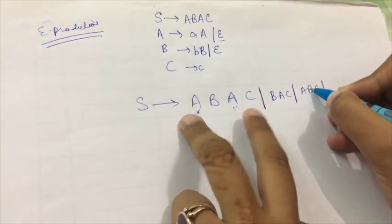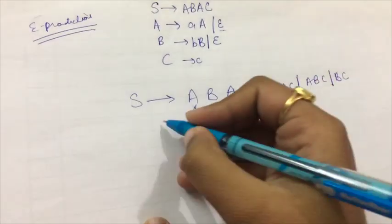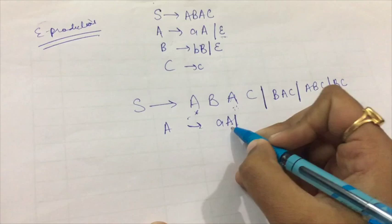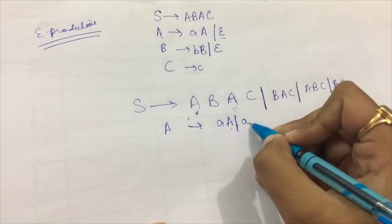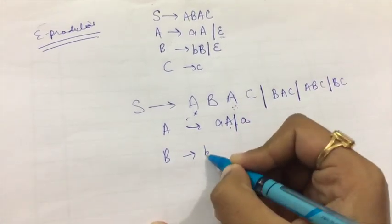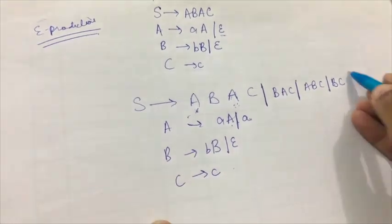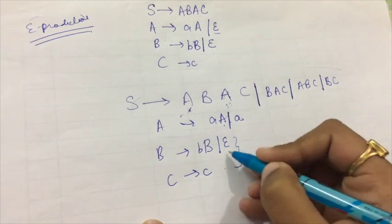There is also possibility that both the A's get null, so the production rule will get this one. And so A will also be AA, and substituting A over here we'll get simple A. And then we are left with BB or null and C as C.